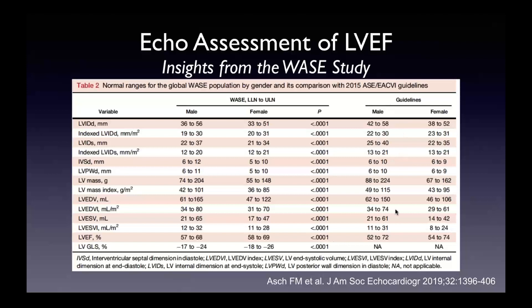The old 2015 guidelines showed 52 to 72% as normal range. Right now we tend to use 55% as our cutoff of normal LV ejection fraction. Whether that's going to increase to 57% depends on what the updated quantification guidelines decide. From the WAYS study, on top of sex-specific cutoffs, we may have ethnic-specific cutoffs — for example for Asian, South Asian, African, Caucasian, or Black patients — with different cutoffs for dimensions, volumes, and ejection fraction.